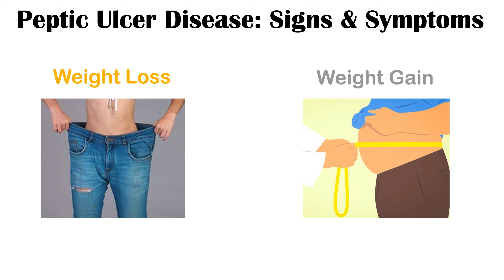It's also important to note the alarm or warning symptoms in peptic ulcer disease. These include overt gastrointestinal bleeding — melena or hematochezia — iron deficiency anemia indicating significant blood loss from bleeding ulcers, weight loss, and recurrent vomiting.